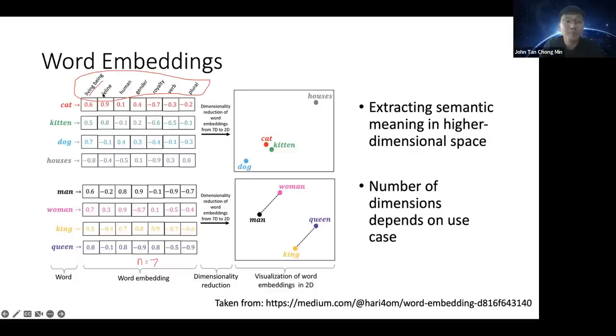In this embedding space, different dimensions may each correspond to a certain attribute. For example, one dimension might represent whether something is a living being or not. Cat is living, so it's positive; a house is not living, so it's negative. Hopefully you can get some form of clear-cut trait like that emerging from the word embeddings.